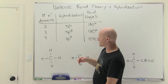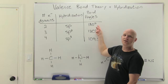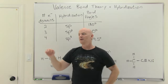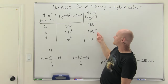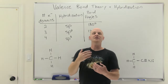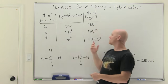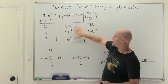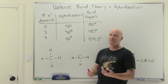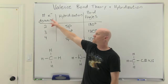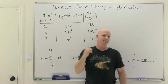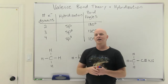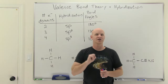VSEPR theory says electron domains around an atom want to spread out as far as possible. For two domains, that's 180 degrees (linear). For three, it's 120 degrees (trigonal planar). For four, they spread into a three-dimensional tetrahedral shape at 109.5 degrees apart. An electron domain is one of two things: either an atom that you're bonded to, or a non-bonding lone pair. It doesn't matter if the bond is single, double, or triple — that's still just one electron domain.